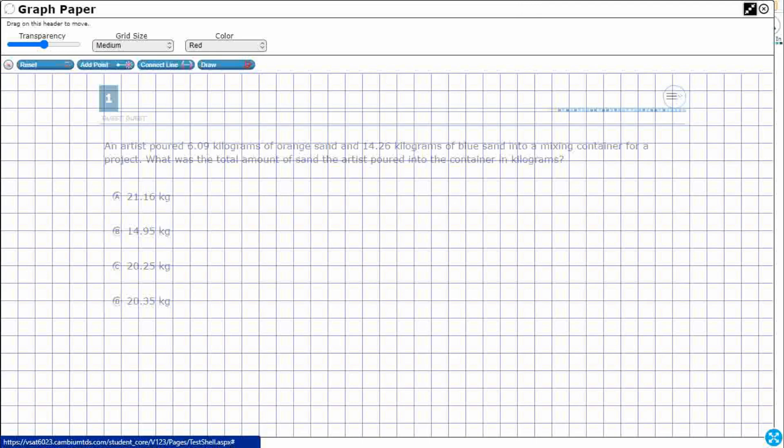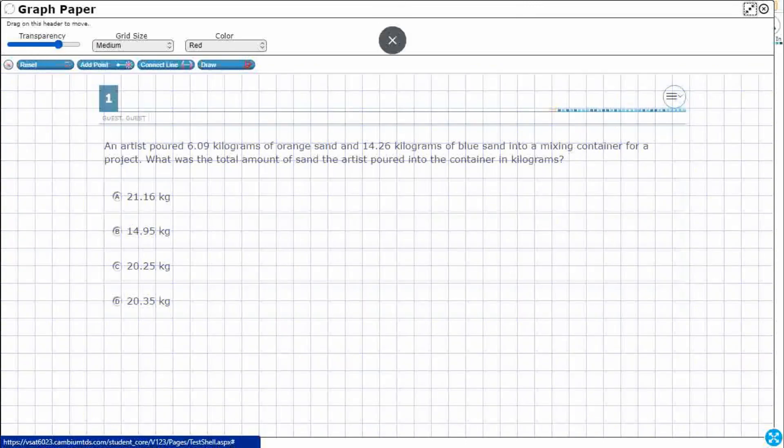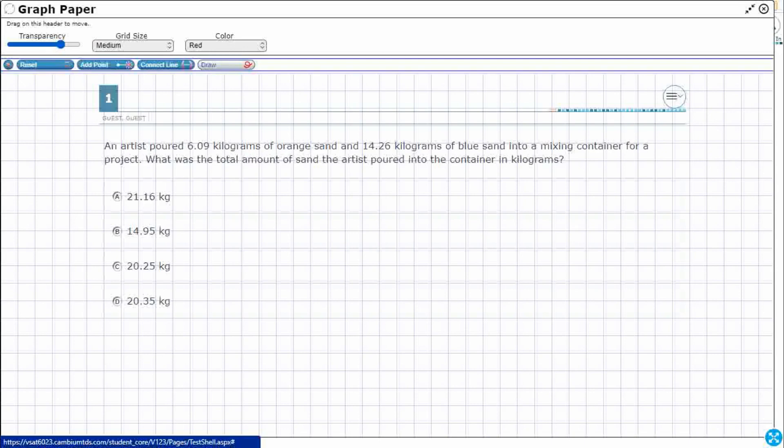I'm going to extend it out to where it basically takes up the whole page using the diagonal arrows. I'm going to increase my transparency so I can see a little bit more behind it, and I can use this Draw feature. This is as close as we get in an online test to being able to draw on the actual test itself.